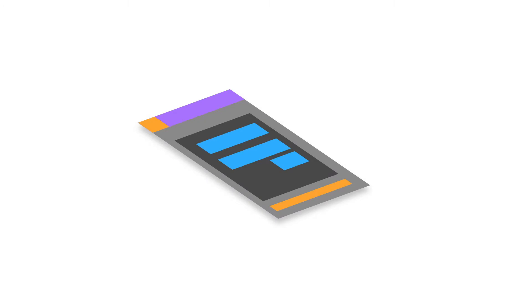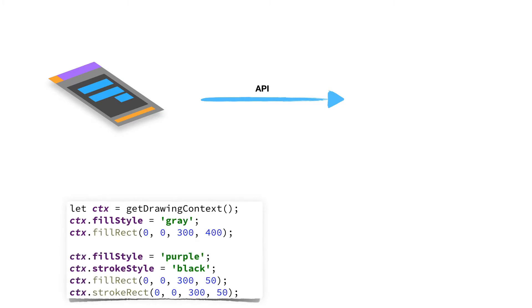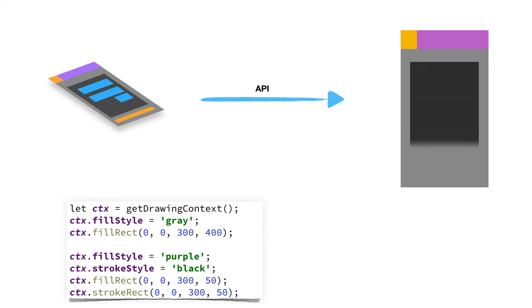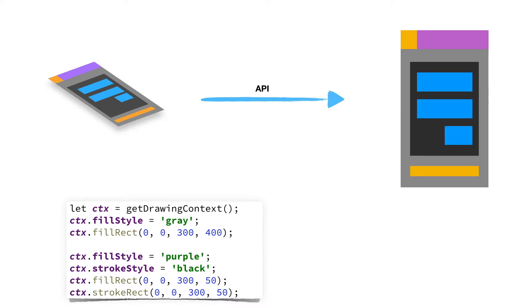Instead of dealing with your UI as a hierarchy of object models, in Immediate mode you consider having only one drawing context or bitmap, and you do all of your drawing inside it with an imperative-looking API. You create a context, set your fill style and stroke style, then fill and stroke rectangles — building up your graphics using commands like these. The UI toolkit takes these commands and draws them onto the bitmap in the exact order you specify, back to front since you only have one canvas. Like a painter working on a single canvas, this is called the painter's algorithm.